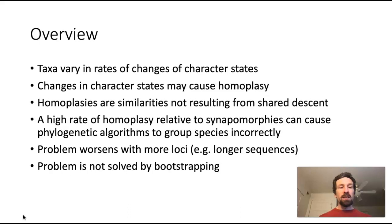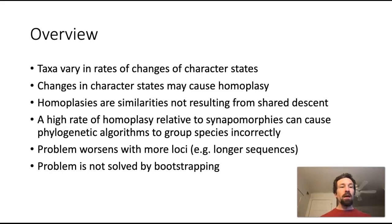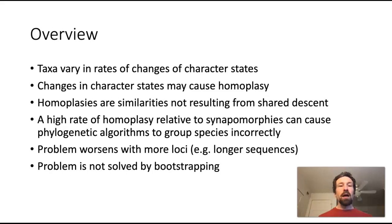Fourth, we will discuss the fact that a high rate of homoplasy relative to synapomorphies can cause phylogenetic algorithms to group species incorrectly. Recall that synapomorphies are shared character states that occur by virtue of descent from a common ancestor with that trait. Next, we will talk about the fact that the problem of long-branch attraction is not solved simply by having larger data sets — in other words, longer DNA sequences or more genes in the analysis.